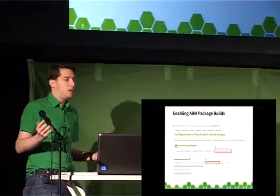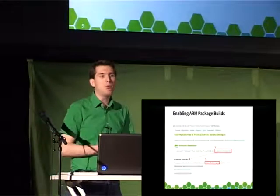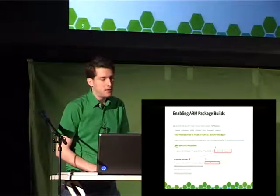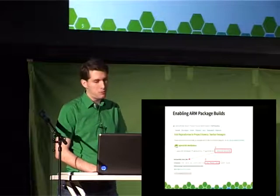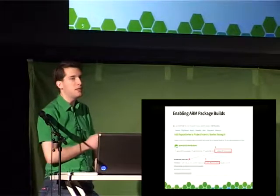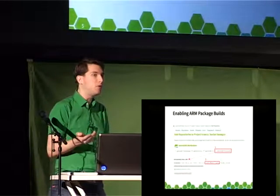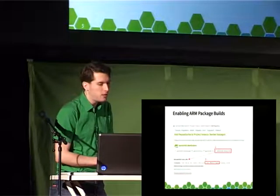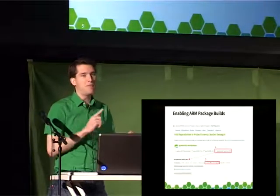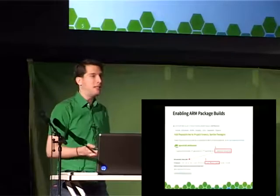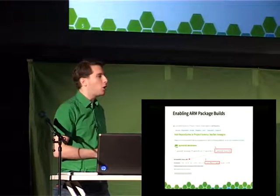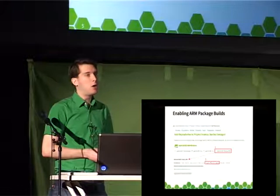If you have your home repository or any development repository in the build service, you can add the OpenSUSE Factory ARM repository. By default only ARMv7 is enabled, but you can additionally enable 64-bit builds and, if necessary, ARMv6 builds. Be aware that ARMv6 is built using emulation, making it pretty slow, whereas ARMv7 and recently also ARM64 are built on native ARM hardware.